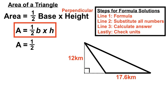Half the base. So we get half of our 17.6 was our base, times by our perpendicular height of 12 kilometers. And when we process those numbers we have 105.6 for our number.